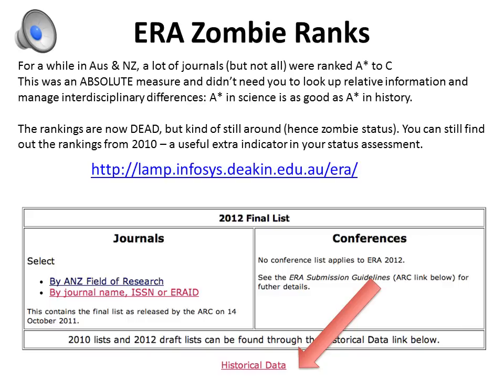The ERA zombie ranks: for a time in Australia and New Zealand, the government ranked many journals either A-star, A, B, or C. This was an absolute measure that already took into account differences between fields, using a battery of measures including what academics identified as the best journals in their fields. Rankings are now dead — the ARC and the government have said please do not use them — but they're still around, hence I call them zombie ranks. You can find the rankings from 2010, which is the last time they were applied, and it is a useful extra indicator in your battery of measures. I've put the URL on the slide; when you click it, you need to go to 'historical data' to access the rankings.